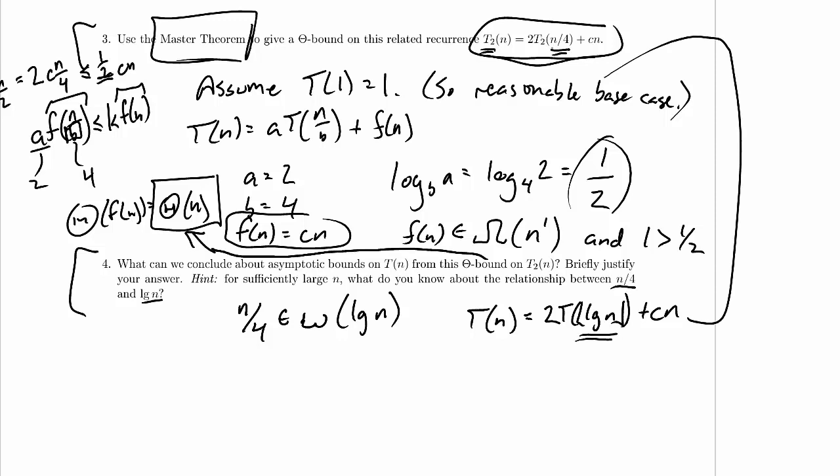This one's got the floor of log n, and this one's got n/4. So presumably what this hint is getting at is that we can say for sufficiently large n that what's inside here is at least as large as what's inside there.